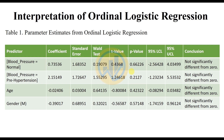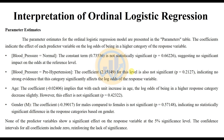The parameter estimates for the ordinal logistic regression model are presented in the parameter table. The coefficients indicate the effect of each predictor variable on the log odds of being in a higher category of the response variable. For normal blood pressure, the coefficient of 0.73 is not statistically significant (p = 0.66), suggesting no significant impact on the odds at the reference level.